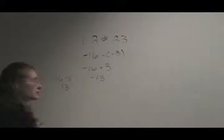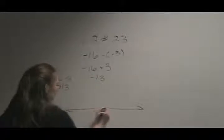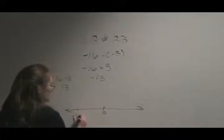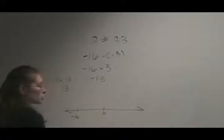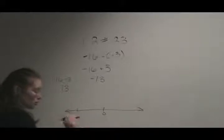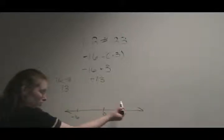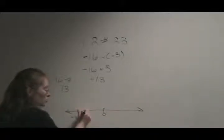If it helps, think about this on a number line. You are out here with negative 16, and you are going to go positive 3, which means you're going towards the right, you're going towards the positive numbers. You go 1, 2, 3, you're here at negative 13.